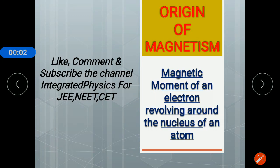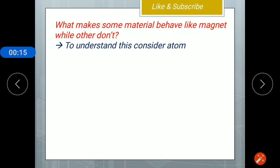Friends, in this video we study the origin of magnetism and derive the orbital magnetic dipole moment, i.e., the magnetic moment of an electron revolving around the nucleus of an atom. What makes some materials behave like a magnet while others don't? Some materials like iron behave like a magnet, and there are other materials which produce a temporary magnetic field when a magnet is brought near them or an external magnetic field is applied.